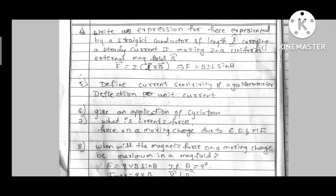Next, fourth question. Force acting on a current carrying conductor placed in a uniform magnetic field. F is equal to B I L sin theta. Define current sensitivity of a galvanometer. Deflection per unit current. That's the answer.